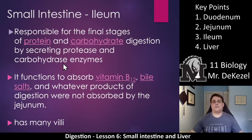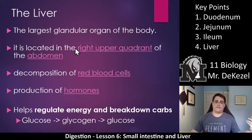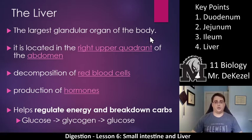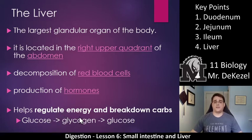We'll talk about the large intestine in a future lesson after covering the gallbladder and pancreas. Next, let's get to the liver. The liver needs to make substances to inject into the small intestine to help break things down. It is the largest glandular organ of the body, located in the upper right quadrant of the abdomen. One of its jobs is to decompose red blood cells. It produces hormones, helps regulate energy, and breaks down carbohydrates — storing glucose as glycogen and breaking it back down for use in an emergency.